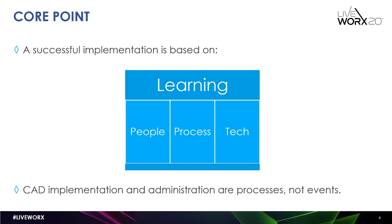Here is my core point. A successful implementation and ongoing administration depends on three main factors: people, process, and technology. Your learning system arches over all three. And of the three — people, process, and technology — the most critical one is people.